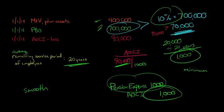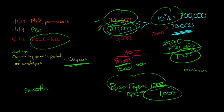And if this continues over time, assuming everything else will remain the same over 20 years, we would eventually get this down to $70,000. But of course, next year, probably the PBO is going to change. The market value of plan assets will change. The AOCI will change.